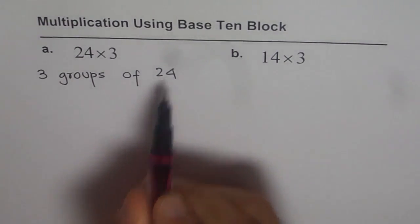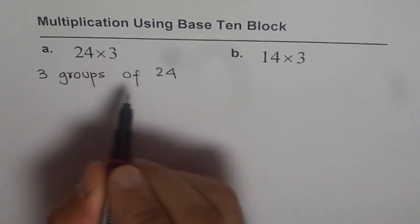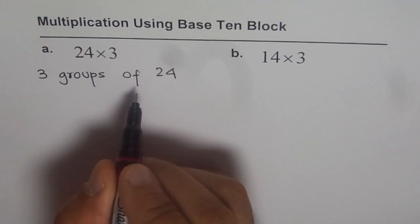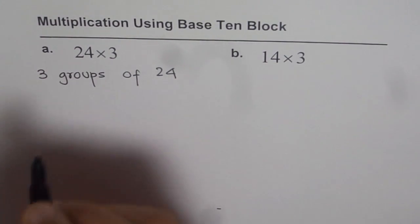2 tens and 4 ones. And we will make 3 groups of 24. That means 3 groups of 2 tens and 4 ones. Let us do it.